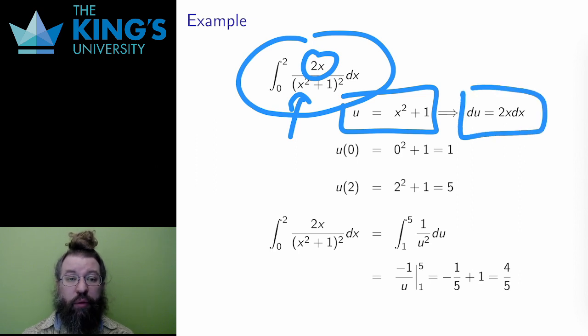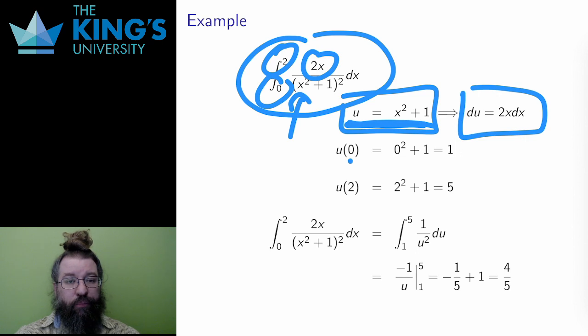But now I have to think about the bounds. The bounds are the edges in x, but how do they affect the new variable u? Well, I can use the substitution to figure out. If x equals 0, then u must be 0 squared plus 1, or 1. And if x equals 2, then u must be 2 squared plus 1, which is 5. So the new bounds will be 1 to 5.